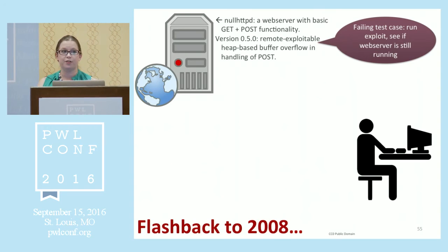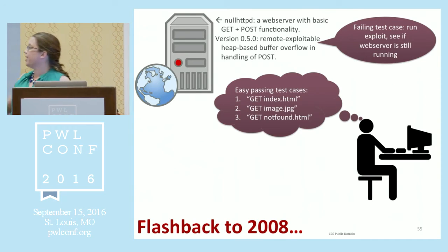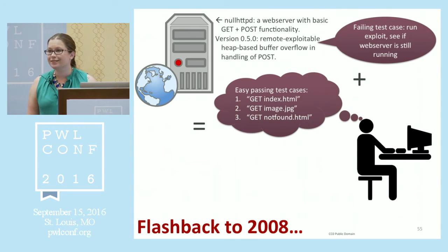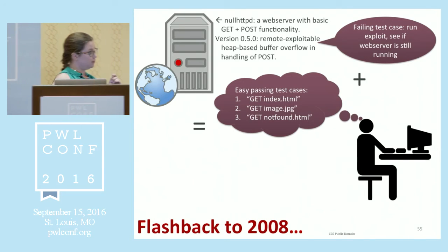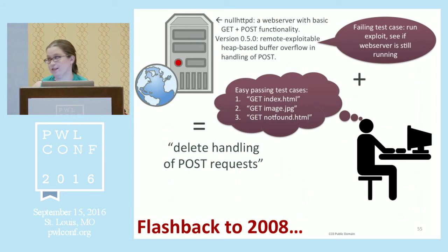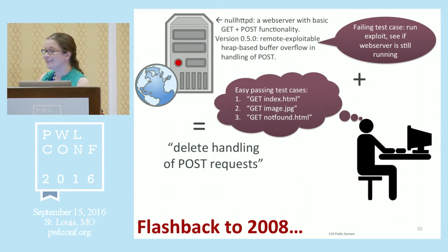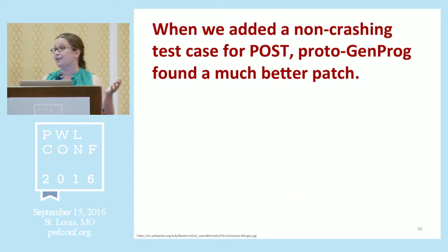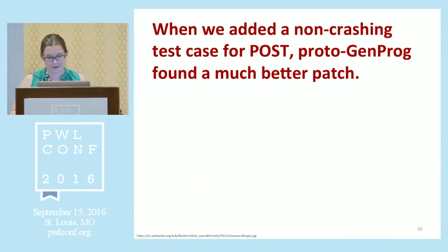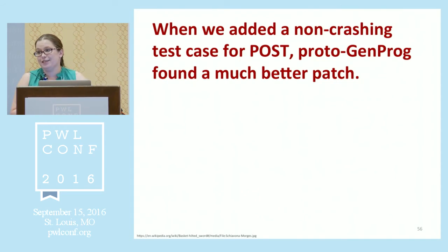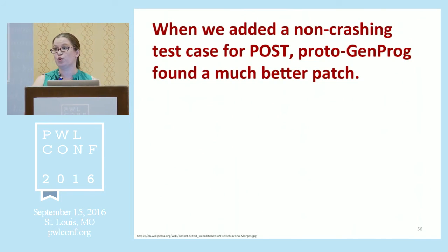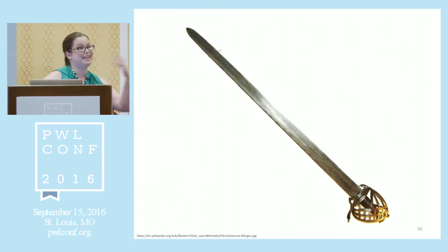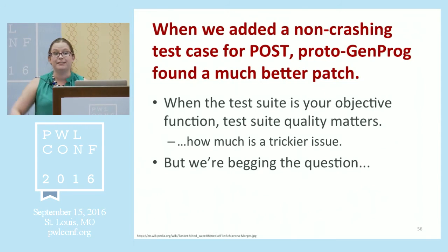We have a bug in POST. We have a bunch of GET requests. Of course the tool deleted POST — it actually happened really quickly. So we felt stupid, added a non-crashing POST test case, and the prototype found a much better patch very quickly. But the point it illustrates is that when your test suite is your objective function, test suite quality really matters because it controls the quality of what you get out. A patch that deletes POST is better than doing nothing — at least you can still get static content — but I'm not going to pretend that's as good as fixing POST. This begs the question of what the heck a high-quality patch is anyway, and I get into this argument with people all the time.